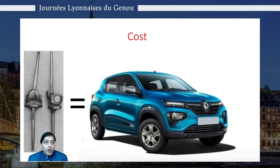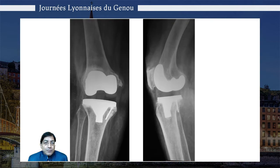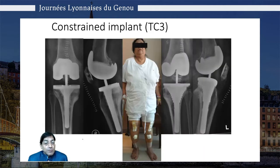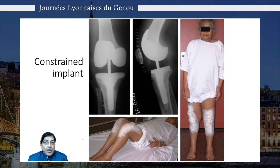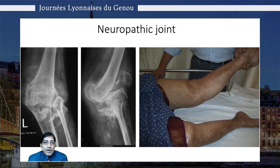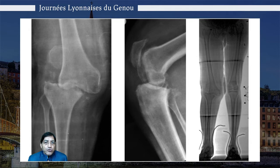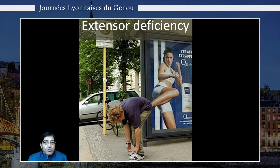So when should one use more constraint? When there's collateral damage, like of the MCL in this case, or if the LCL is severely stretched out in a varus deformity — that's when to use a constrained implant. If the medial collateral ligament is stretched out in a valgus knee, that's when we would use constraint. If there's a neuropathic joint, a hinge is a good idea. Likewise, if there's a huge flexion gap and the jump height of the post exceeds the flexion gap, or if there's extensor deficiency like in a poliomyelitis patient.